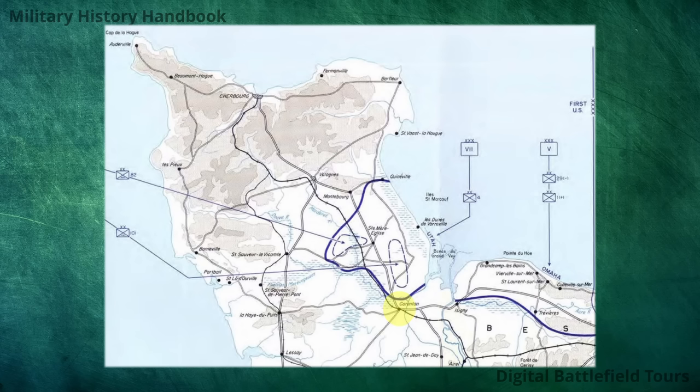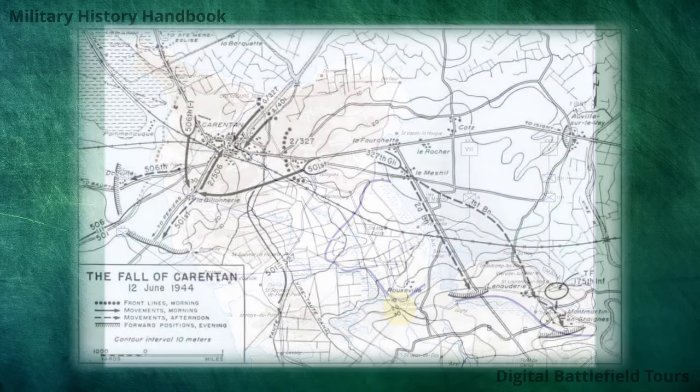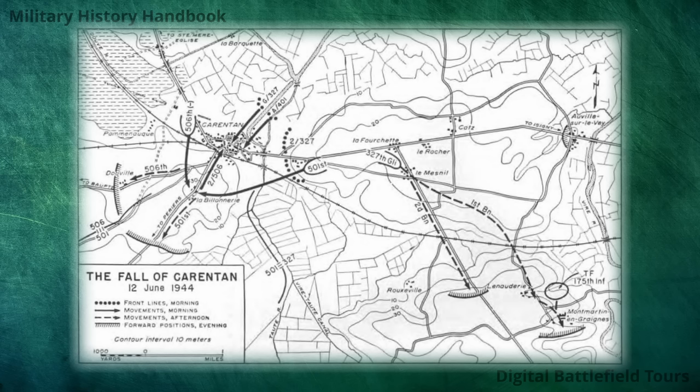Of the divisions making up 7th Corps, the 101st Airborne Division was the closest to Carentan because their drop zone was fairly far to the south. So by 7th Corps, the 101st Airborne Division was given the objective of taking Carentan and thereby linking up with 5th Corps. It was then up to General Taylor, the 101st Airborne Division commander, to take Carentan — and he did this by maneuvering his regiments, with a plan to first encircle the town and then attack it from multiple directions.